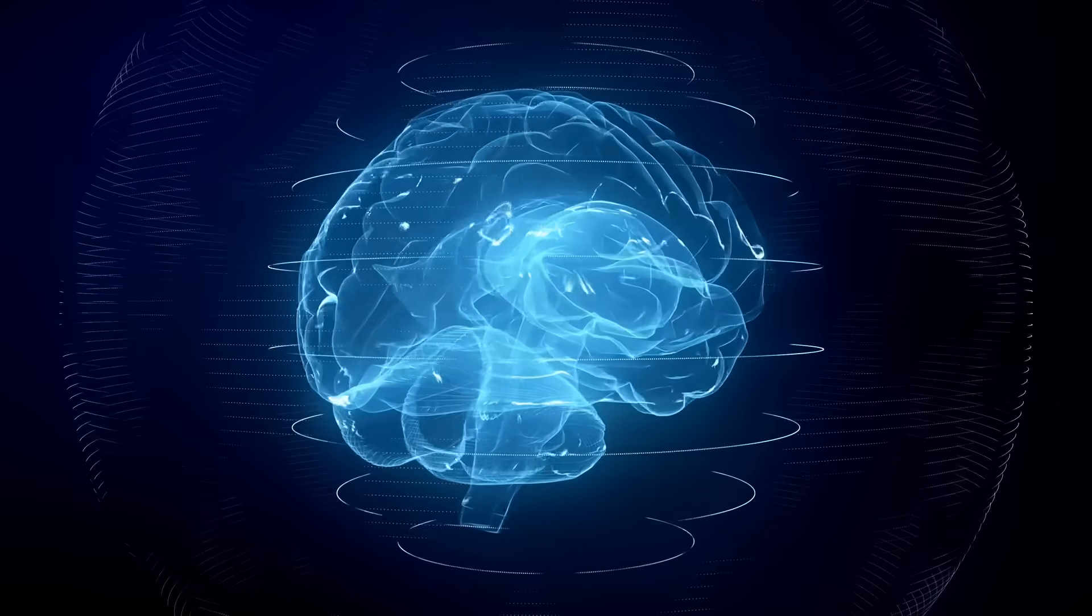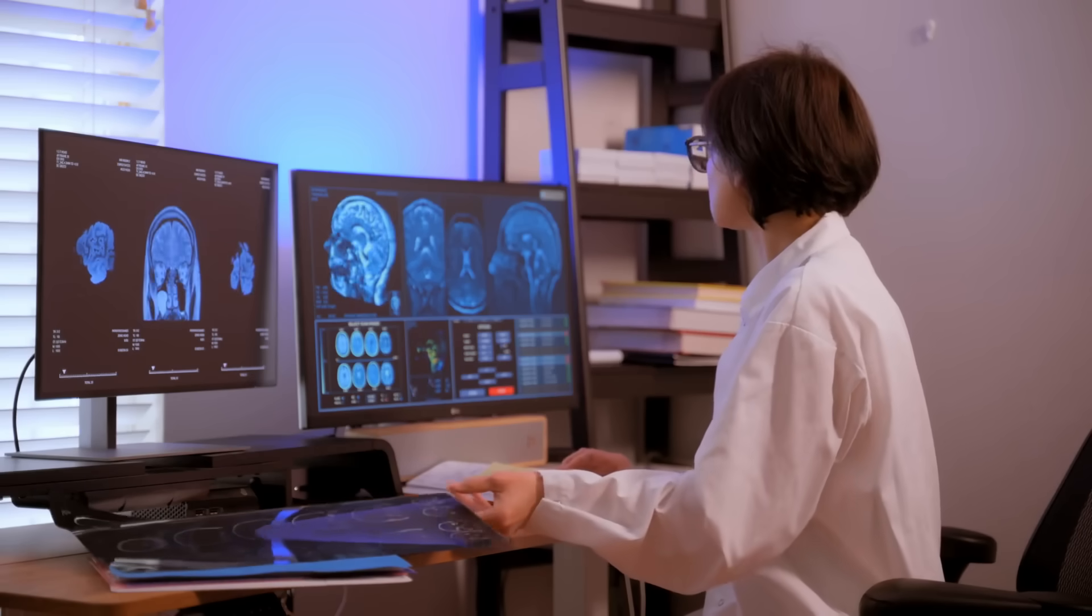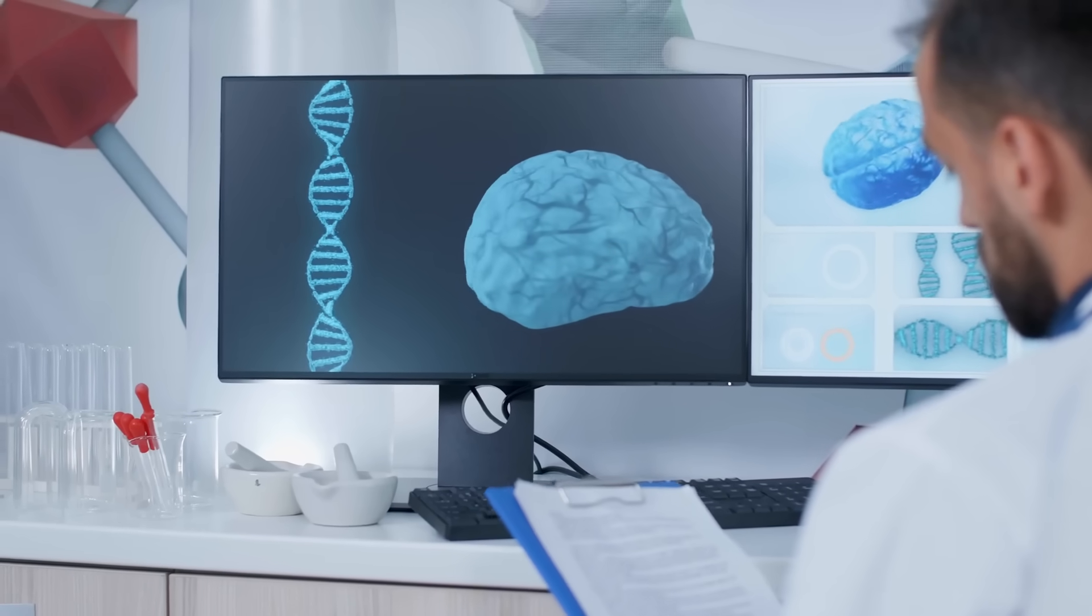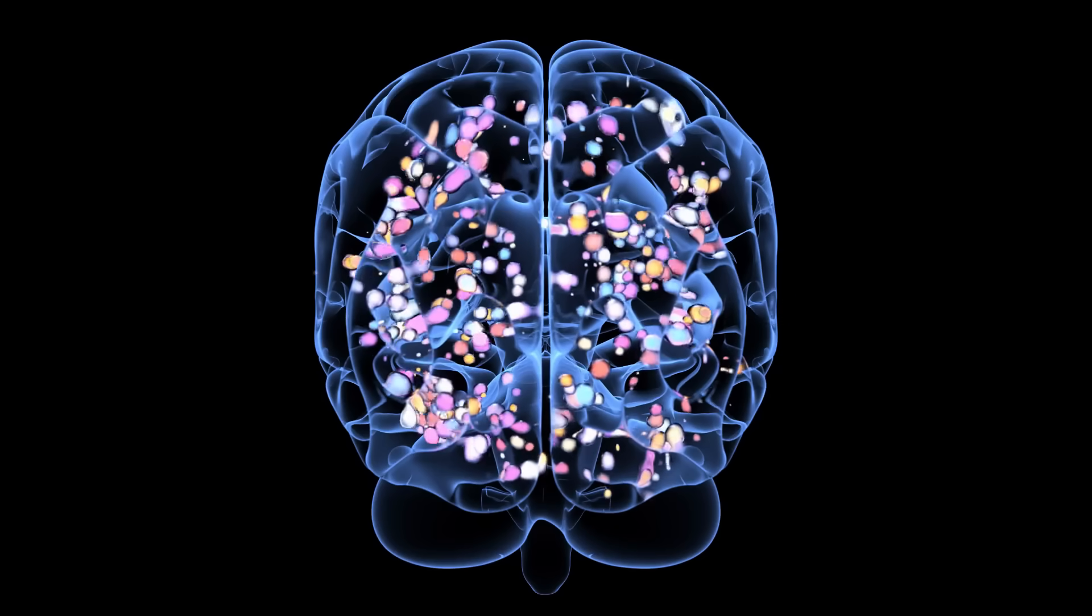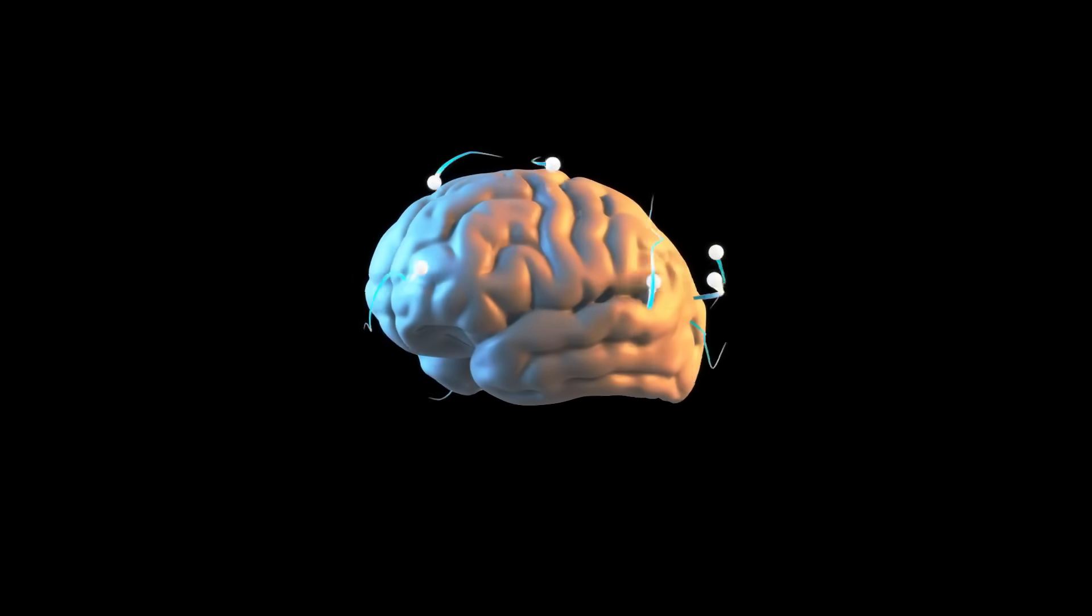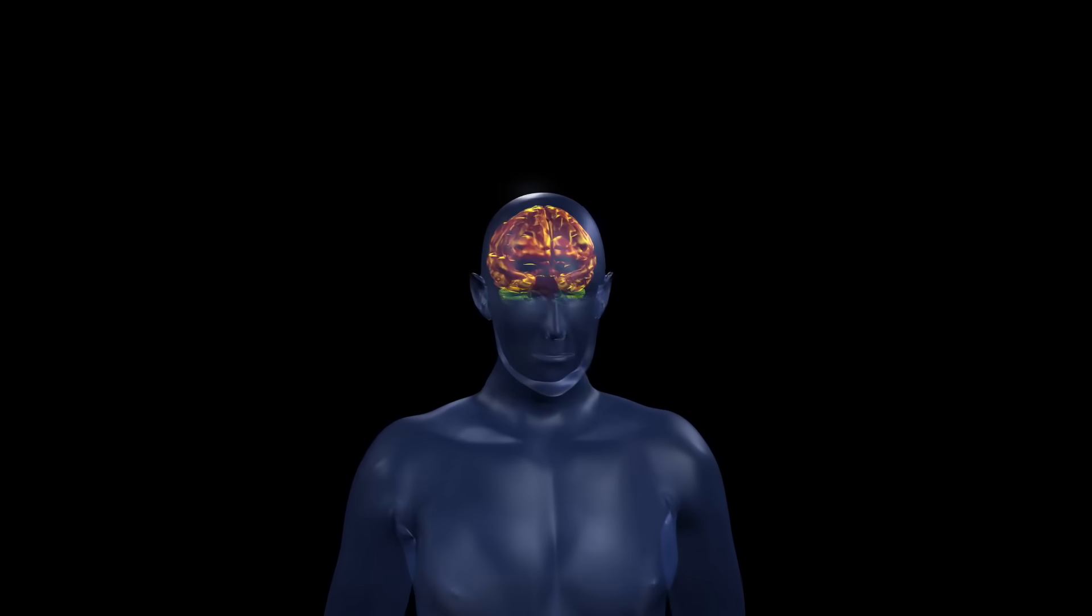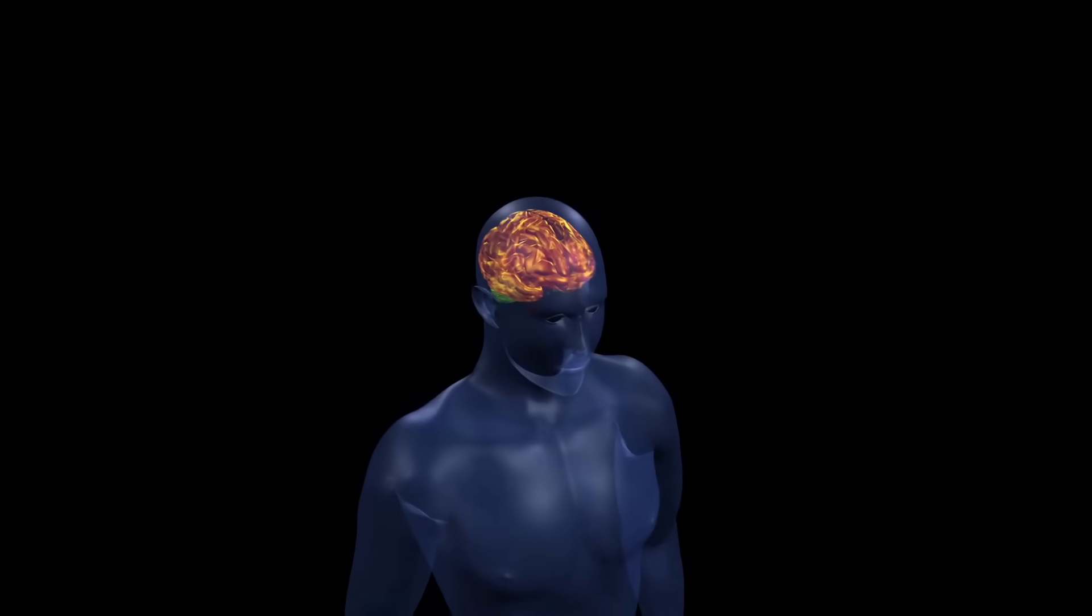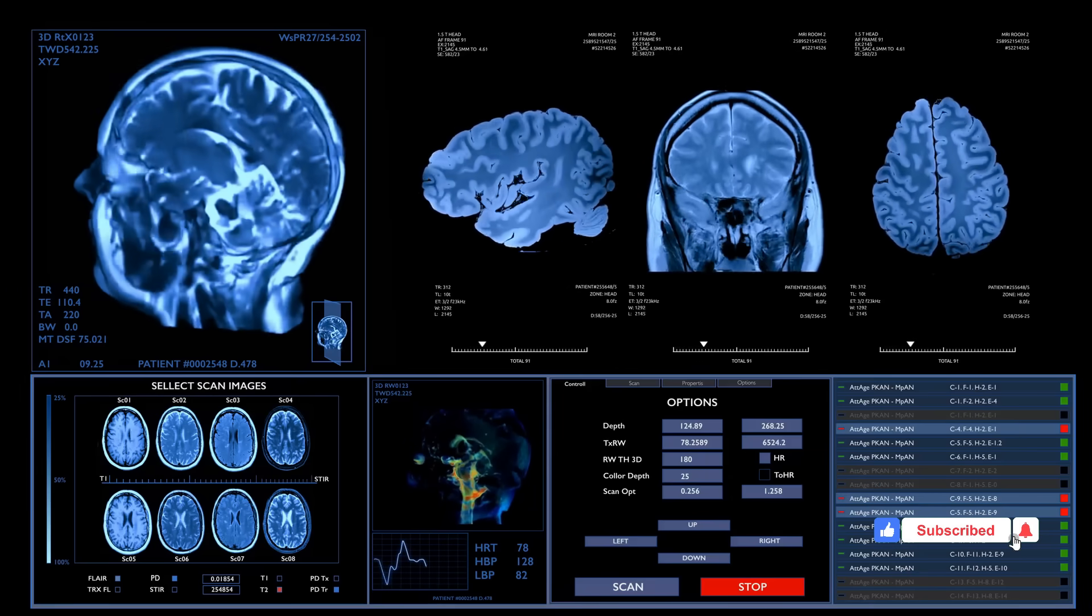So what's really happening in your brain? And how do you fix it? The neuroscience. Let's start with what neuroscience has discovered. Researchers using brain imaging technology found that when you write by hand, three distinct areas of your brain activate simultaneously. Your motor cortex controls the precise movement of each letter. Your visual processing areas track every curve and stroke you create. And your language circuits engage deeply with the meaning of what you're writing.